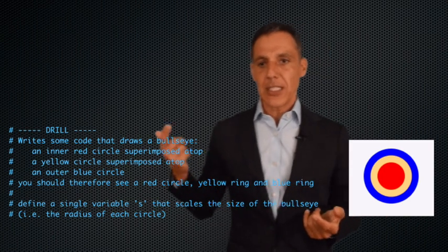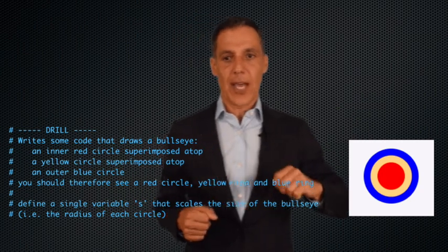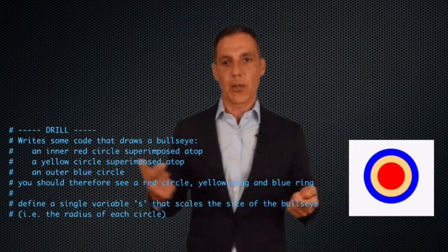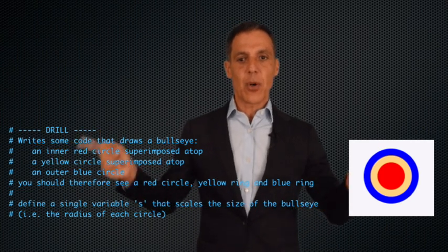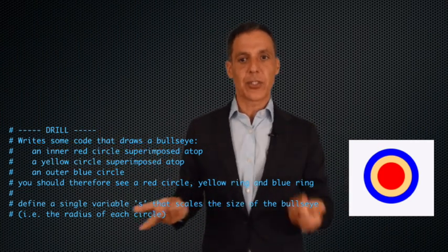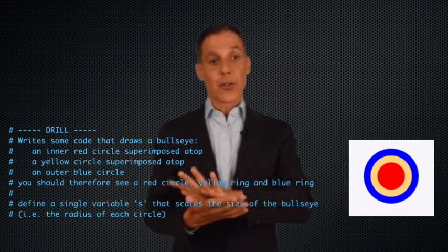Here's the drill. Please write some code that draws something that looks like this bullseye. I'm going to ask you to do this in the following way, although you can do it any way you want. Draw an inner circle that's red, superimposed on top of a yellow circle, which is superimposed on top of a blue circle.